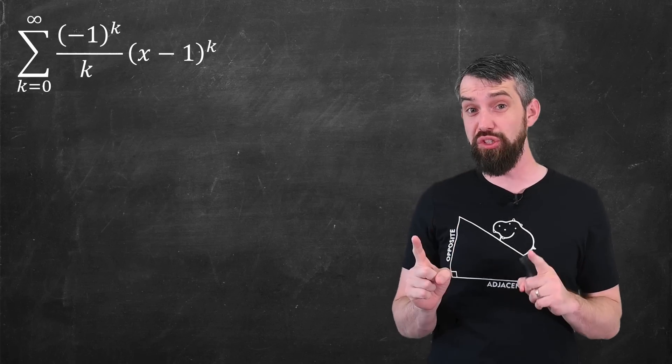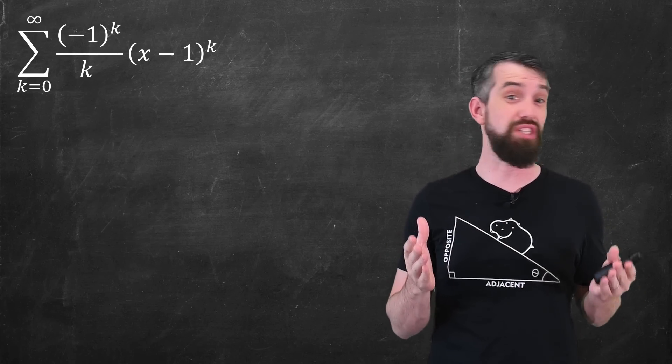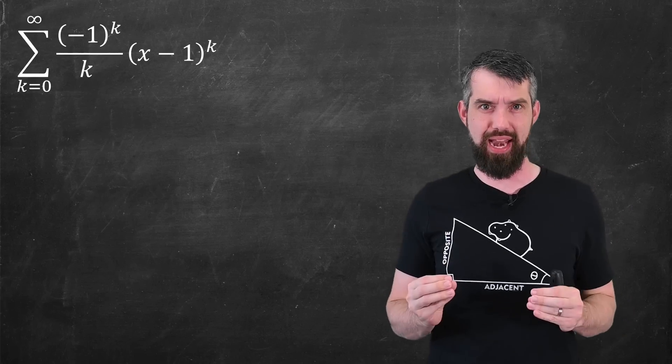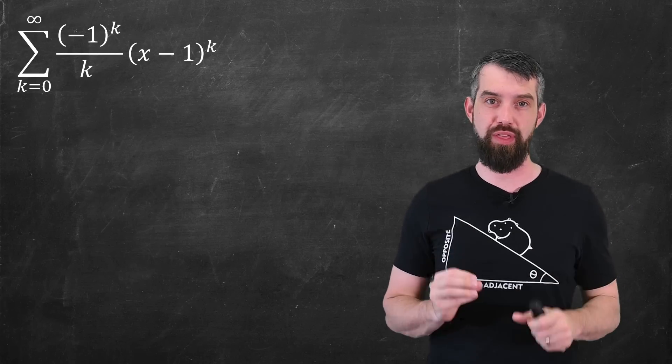Now, as you recall when we were doing this visually, beyond the value of x equal to 2, this was terrible. So why is that? Well, let me remind you a little bit of the theory here.